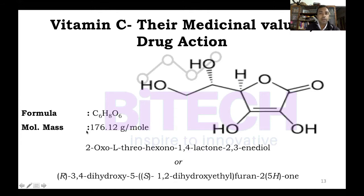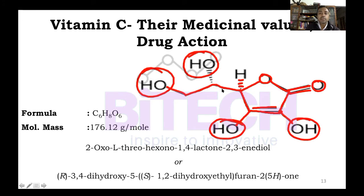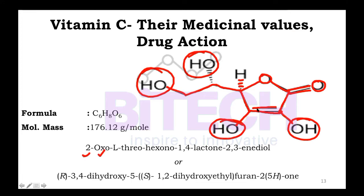Vitamin C, also known as ascorbic acid. Looking at the structure: there are ring structures with a double bond. At a position you have an OH group. In reduced form, at certain positions we have dicarbon and OH groups. At position two there is an OXO group. The IUPAC name is L-3-O-hexono-1,4-lactone-2,3-indiol, and also named 2,3-dihydroxy-2,3-dihydro-furan-2-one type structure.